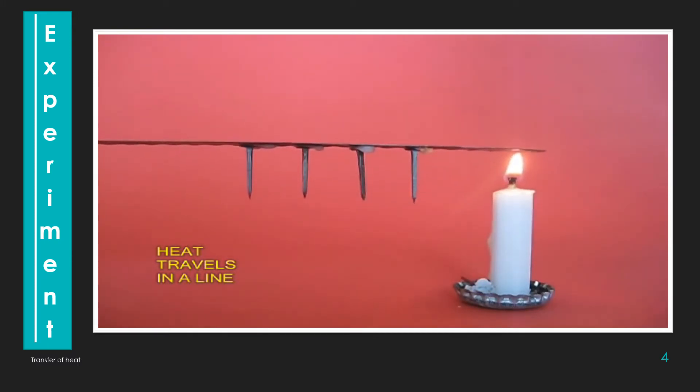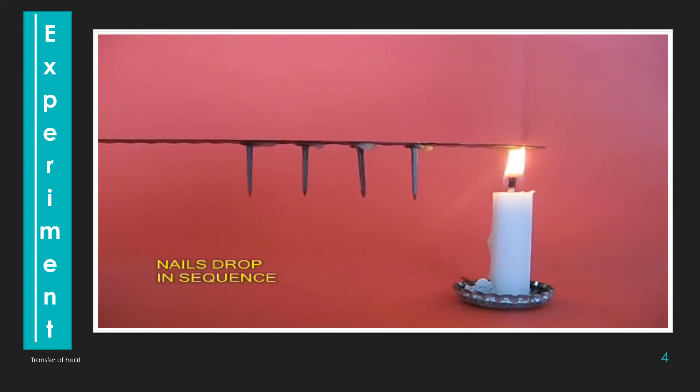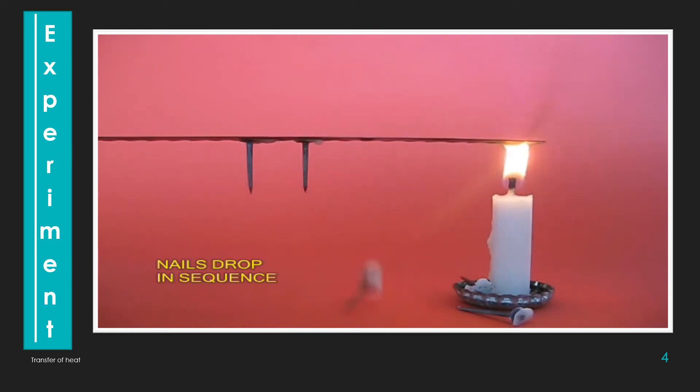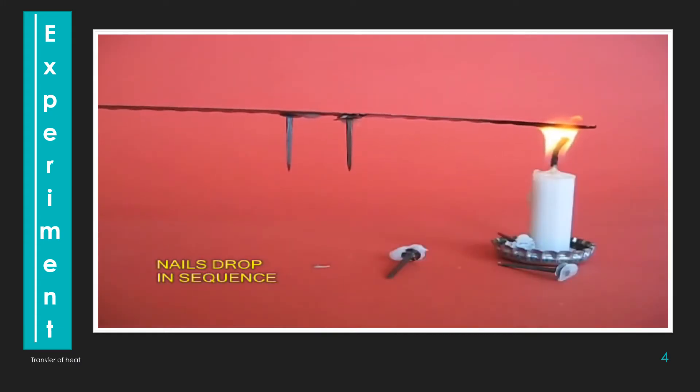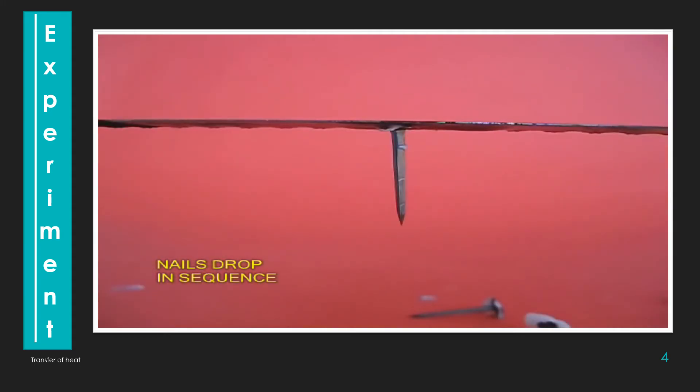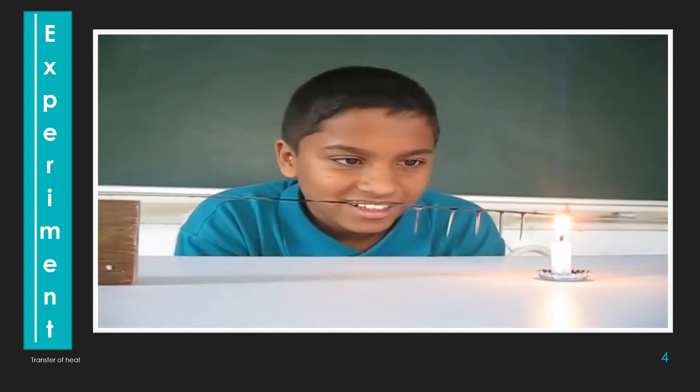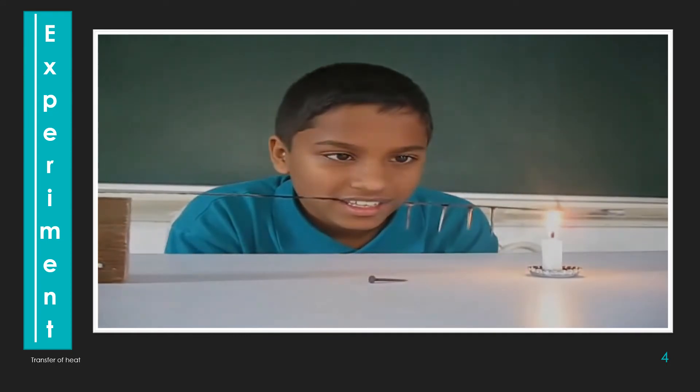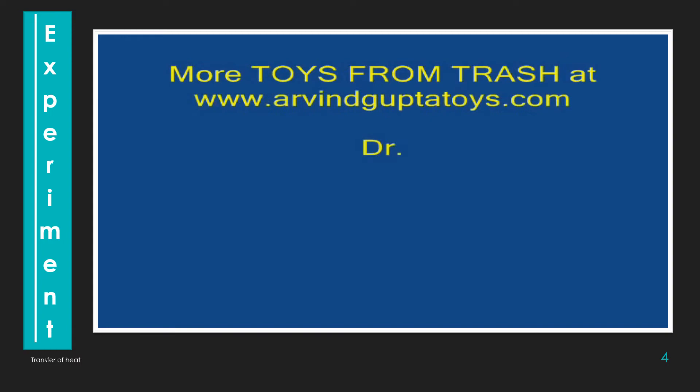It travels in a line. You can see in the video, nails are dropping in sequence. What happens to the wax pieces? Do these pieces begin to fall? Yes, which piece falls first? Do you think that heat is transferred from the end nearest to the flame to the other end? We have seen that heat is transferred from the hotter end to the colder end.